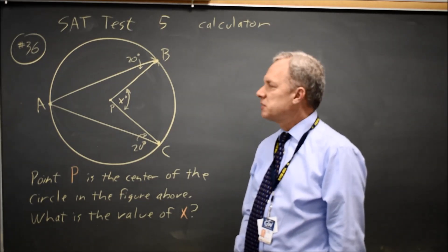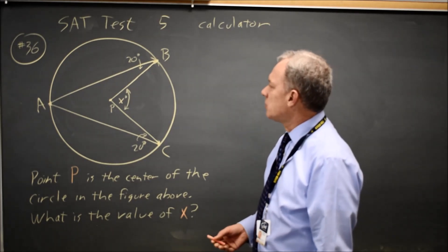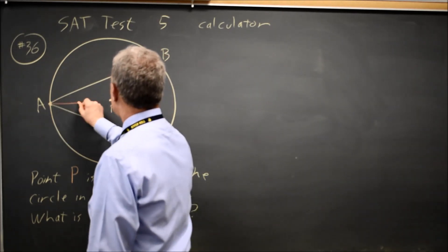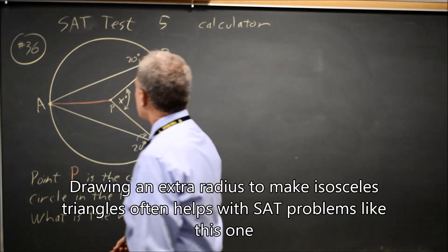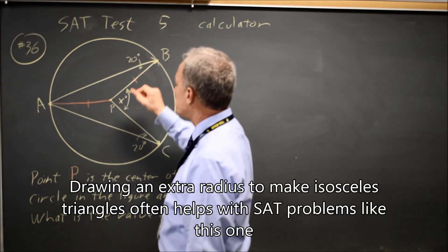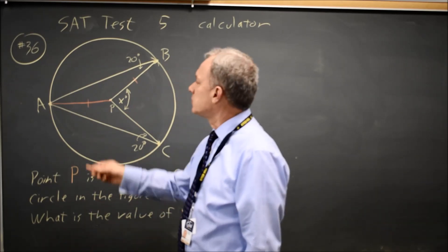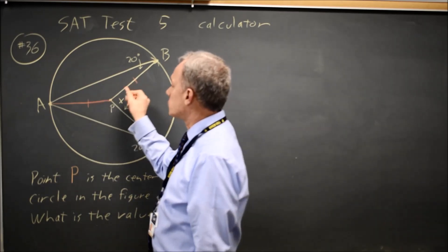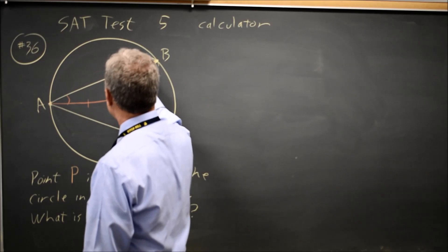To solve this, I'm going to draw one more line from A to P, and the length of that line is the radius of the circle, which is also the length of P to B, so I have an isosceles triangle with two sides equal, which means two angles are equal.